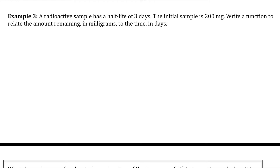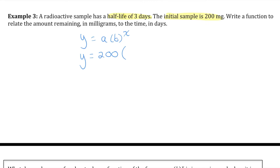Example three says a radioactive sample has a half life of three days. The initial sample is 200 milligrams. Write a function to relate the amount remaining in milligrams to the time in days. Any exponential function is in the format y equals a times b to the x, where a is the initial value and b is the growth or decay factor. So y equals 200, and since this is a half life question, I know that 200 is being cut in half repeatedly. The exponent tells how many times it gets cut in half — it gets cut in half once every three days, so my exponent would be the total amount of time divided by three days. In function notation: the amount at time t equals 200 times a half to the t over three.